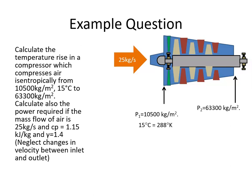Here's our question. We can see that the air at the entrance to the compressor is 10,500 kilograms per meter squared at 15 degrees Celsius, which is 288 degrees Kelvin. The output pressure is 63,300 kilograms per meter squared, and we're asked to calculate the temperature rise. So we want to calculate the temperature at the output here.